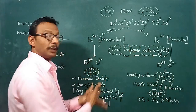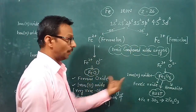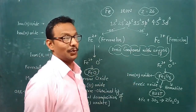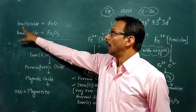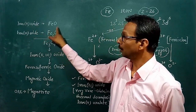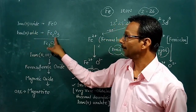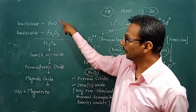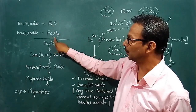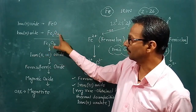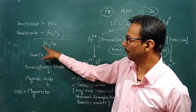Now let us see: Iron(II) oxide has the formula FeO, and iron(III) oxide has the formula Fe2O3. If we combine these two, we get Fe here as 1 plus 2 = Fe3, and oxygen as 3 plus 1 = O4. So the combined formula is Fe3O4.